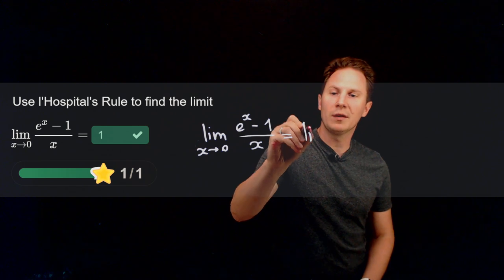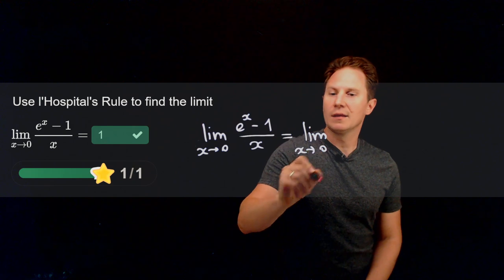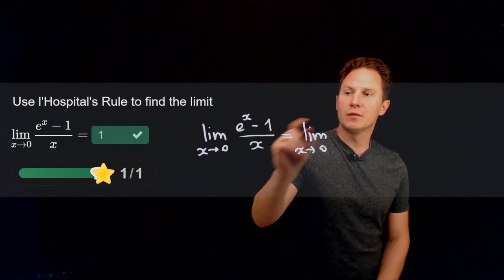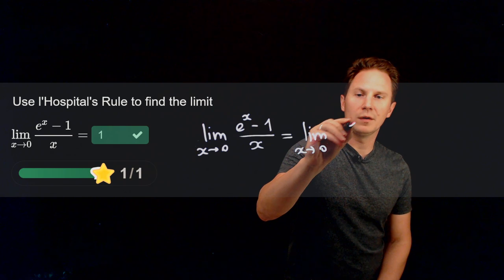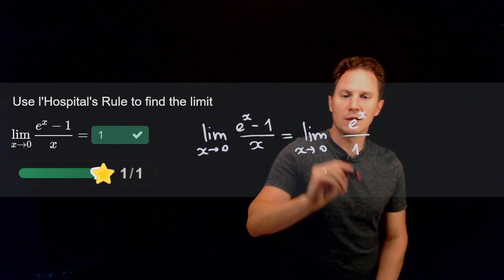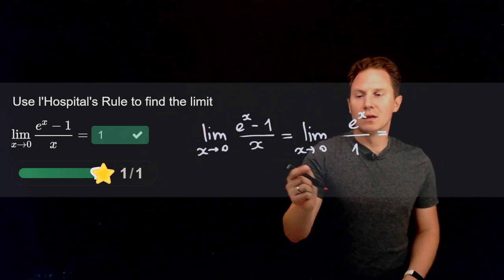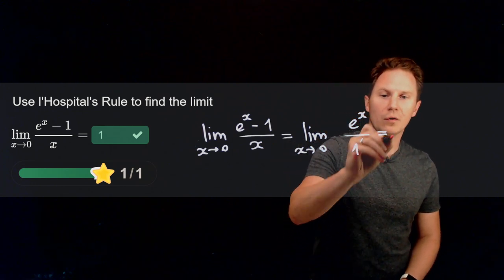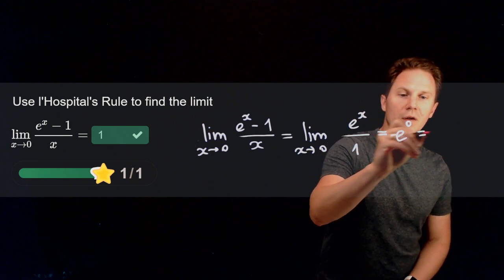e to the x minus one differentiates to e to the x, whereas x differentiates to one. Therefore, the limit of e to the x as x approaches zero is e to the zero, which is equal to one.